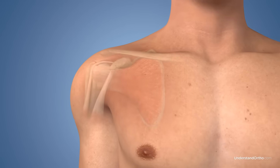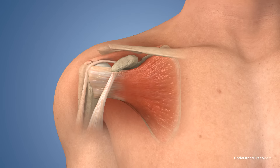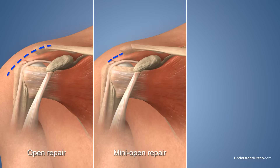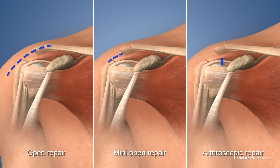Surgical repair techniques vary depending upon your surgeon's preference, the severity of your tear, the tissue quality, and your individual anatomy. These techniques include open repair, mini-open repair, and arthroscopic repair.